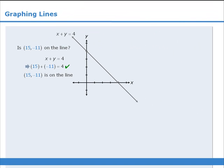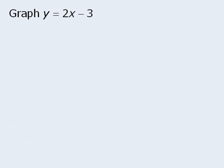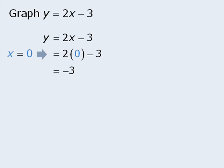Now let's get some practice graphing lines. We'll begin by graphing the line that corresponds to the equation y equals 2x minus 3. To graph this line, we need to find some solutions to the equation. Since the equation already has y isolated on one side, we can plug in values for x to find corresponding values for y. For example, if x equals 0, we replace x with 0 and simplify to see that y equals negative 3.